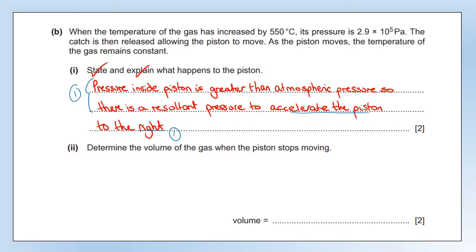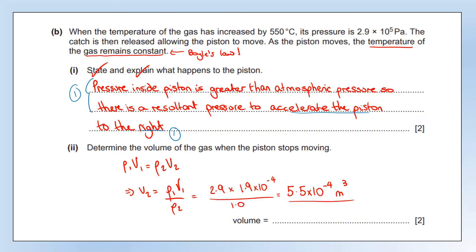Determine the volume of the gas when the piston stops moving. The key information is that temperature remains constant — that tells us we can use Boyle's law: P₁V₁ = P₂V₂. Before expanding, pressure was 2.9 × 10⁵ Pa. Once finished expanding, it will be at atmospheric pressure: 1 × 10⁵ Pa. The volume at the start was 1.9 × 10⁻⁴ m³. The 10⁵ factors cancel on top and bottom. As usual, we get a working mark for showing where our numbers come from, and a mark for the correct volume with unit.